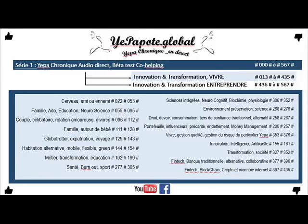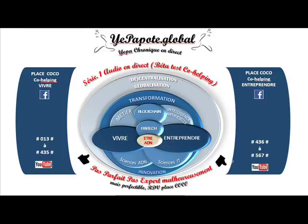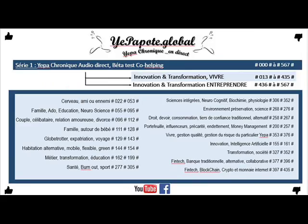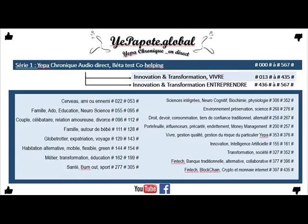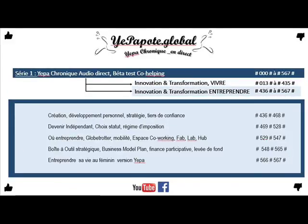Si vous choisissez, par exemple, de prendre le statut micro-entreprise, donc micro-BIC, vous allez utiliser l'imprimé fiscal 2042C. C'est-à-dire que vous allez porter directement le montant brut du chiffre d'affaires sur votre déclaration personnelle de revenu, en accédant directement au site impots.gouv.fr.